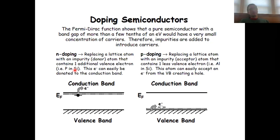Because of that additional electron, you now have energy levels very near the conduction band that are occupied, and the Fermi level is just in between these additional states and the conduction band. For that reason, very little thermal energy is sufficient to excite these electrons into the conduction band, where the electrons are highly mobile and can contribute to conductivity.